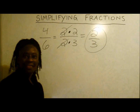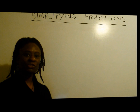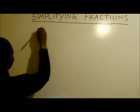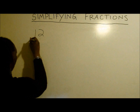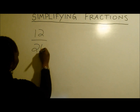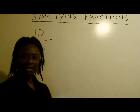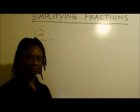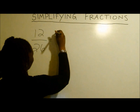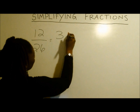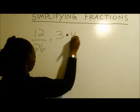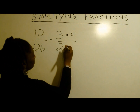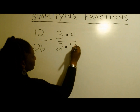Great, that's our answer. Let's do another one. This time we'll take 12 over 26. Now just like before, we simply have to break these numbers down. So for 12, we get 3 times 4. And 26 will give us 2 times 13.